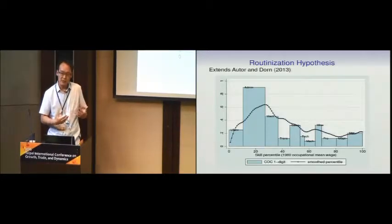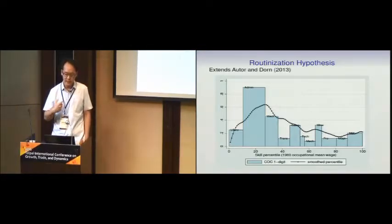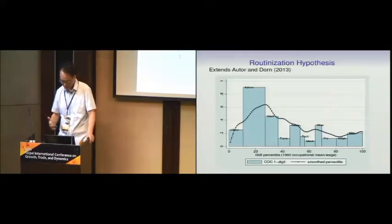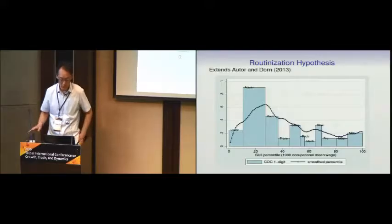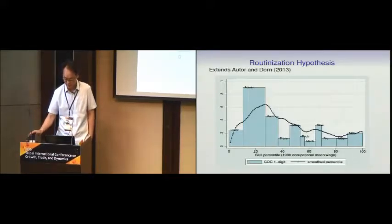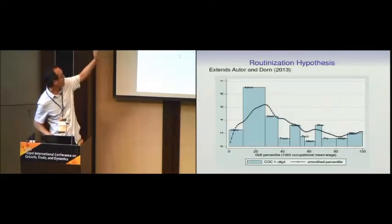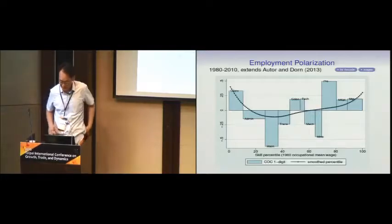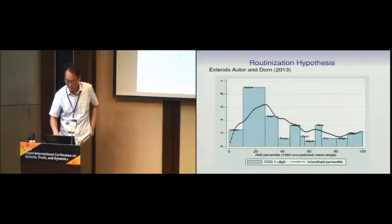The bars here show the routinization index, RTI, which Autor and Dorn — and in different papers, Acemoglu and Autor, Levine-Burnain, and others — have constructed. There's some relationship between occupations with a high routinization index actually seeing a little more decrease in employment share, but it's not as tight. I'll come back to this picture at the end when we actually propose better measures of routinization.